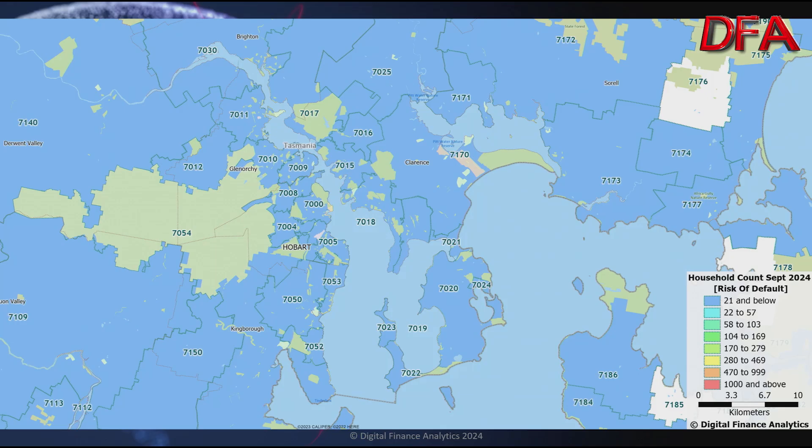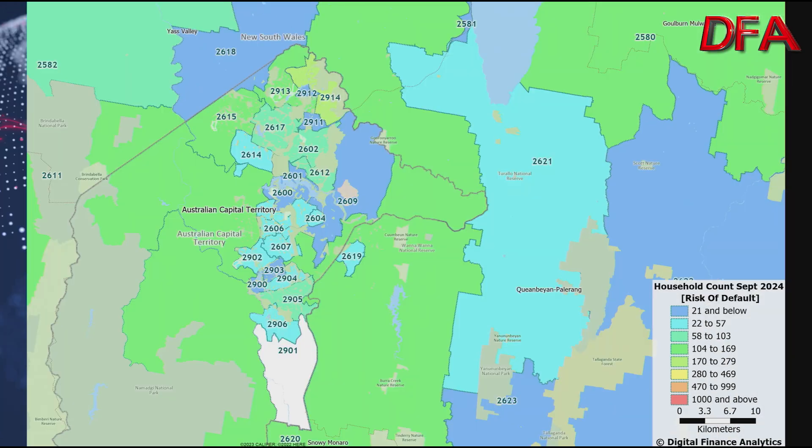Tasmania shows relatively low levels of default, though I'd highlight the low population density. Finally, the ACT: close to the centre there's not too much to worry about, but looking out into some of the more suburban areas, we do have default rates that are somewhat higher.